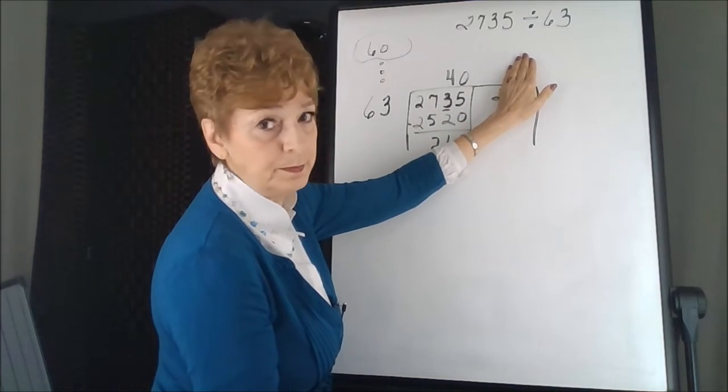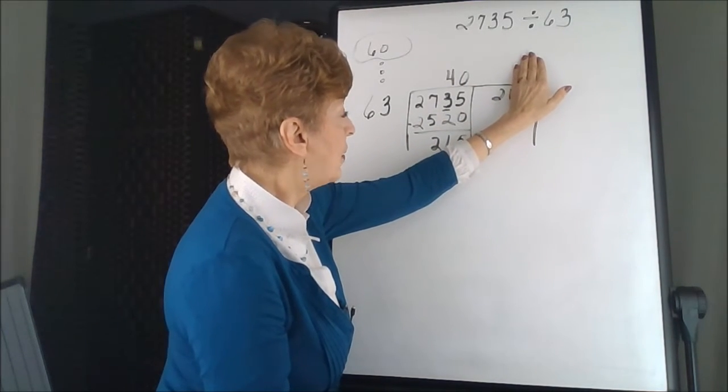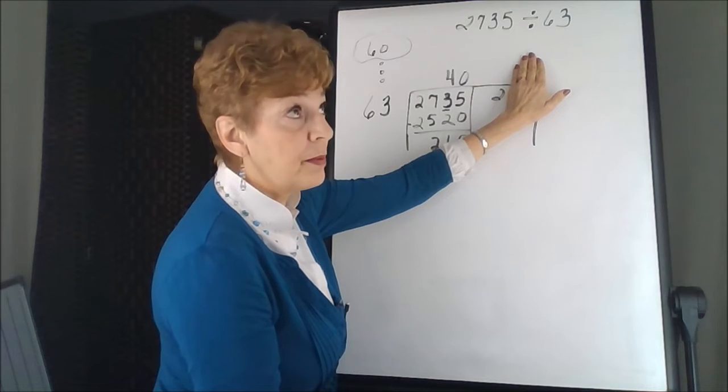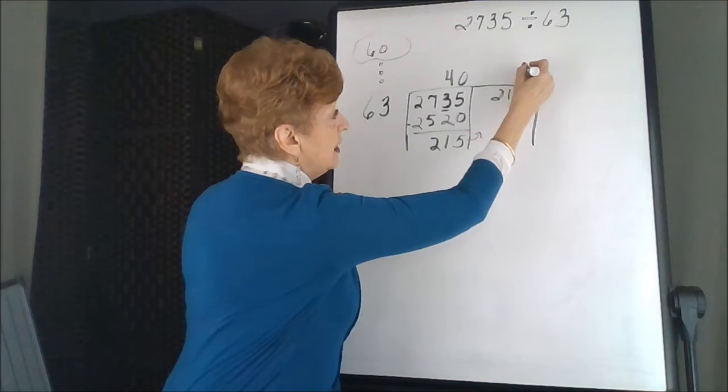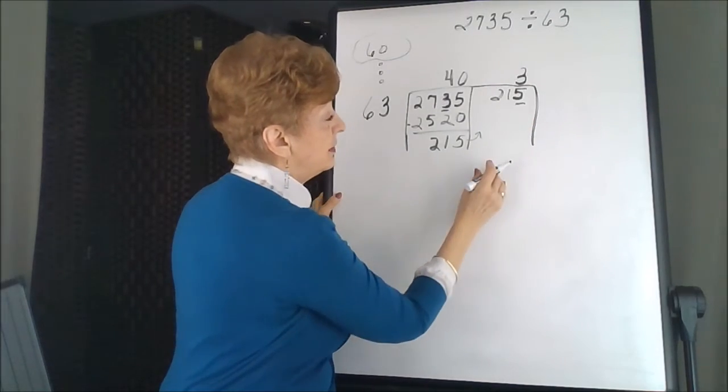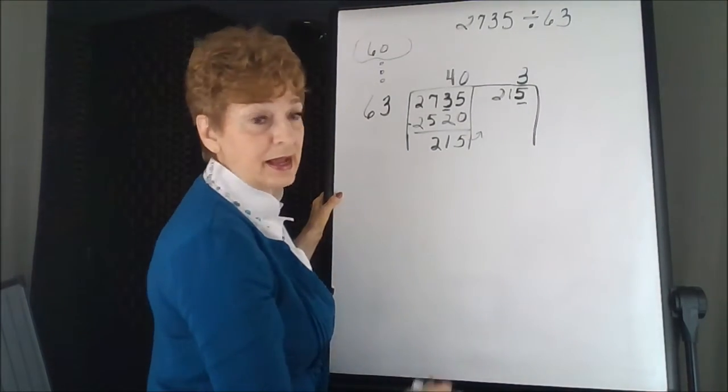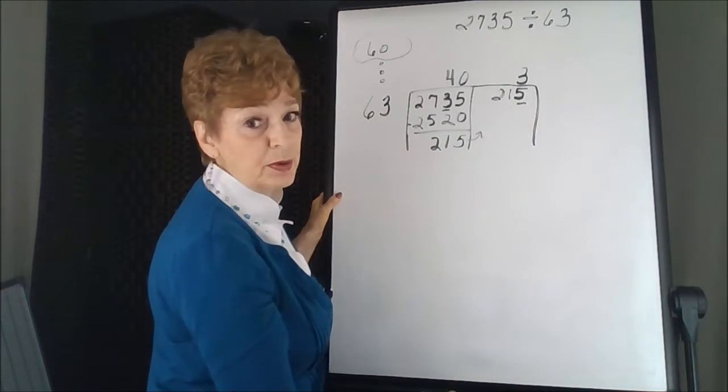But to actually think of 60 divides into 215, that gets hard again. So I'm only going to take the 6. 6 goes into 2, no. 6 goes into 21, 3 times, because 3 times 6 is 18. That's pretty close. But the 3 is going to go above the 5, because I darkened it. It reminds me of that's where I'm going to put my answer.